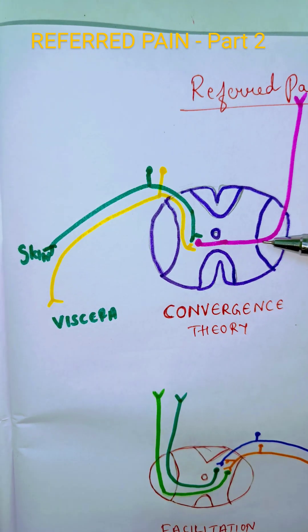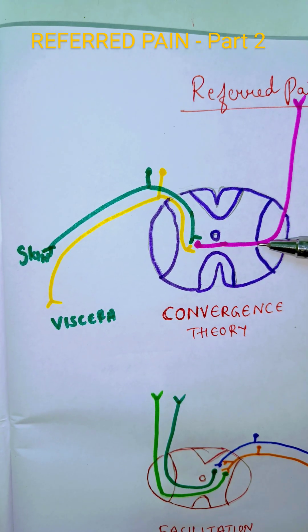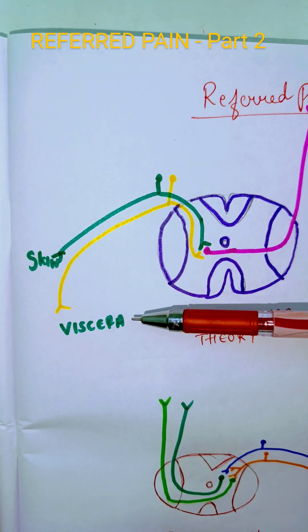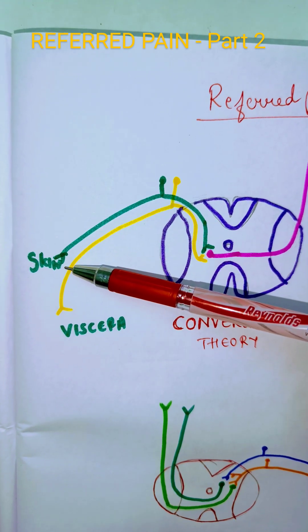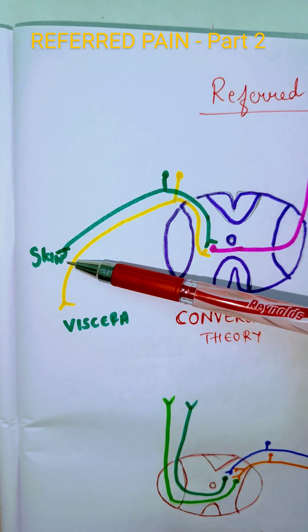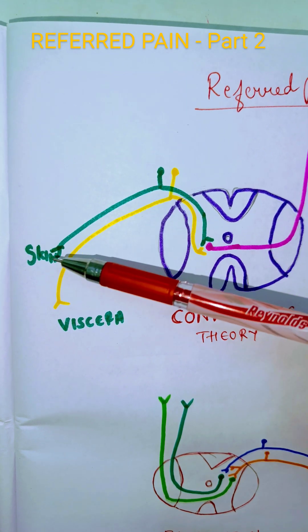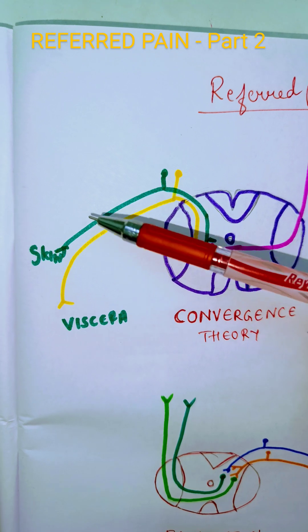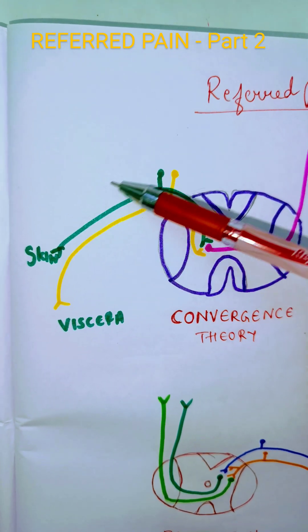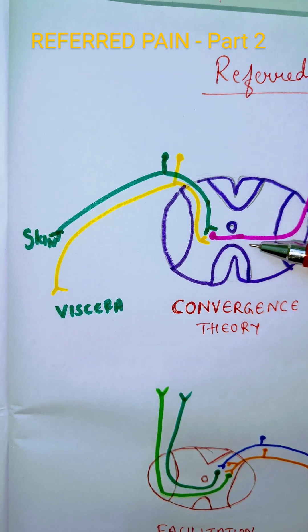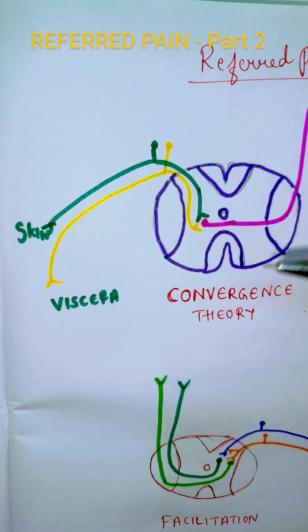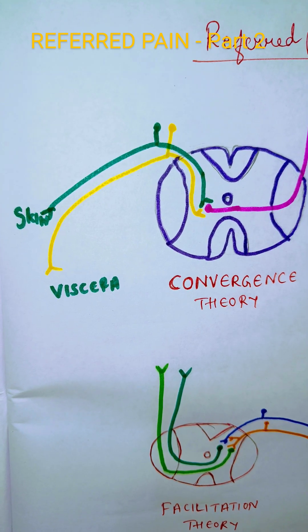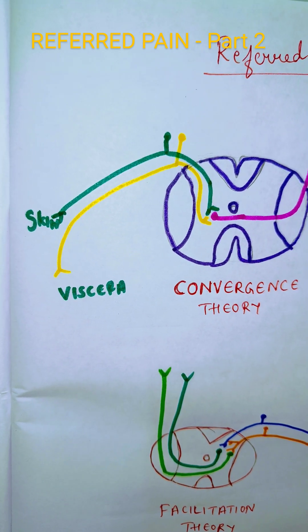When visceral injury occurs, the yellow color neurons get stimulated, activating the common second order neuron. But normally, according to our experience — some books call it the experience theory — the brain thinks the most common site of injury is the skin, since the skin is always exposed to the environment. So the brain interprets the information as coming from the skin, even though the injury is in the viscera. This is the convergence theory, sometimes referred to as the experience theory.